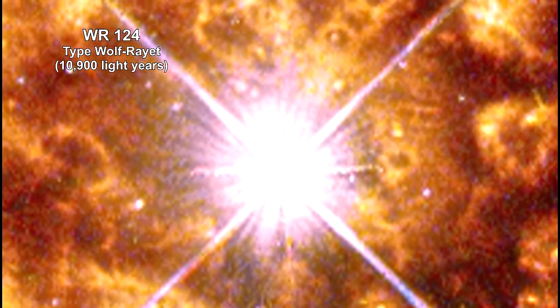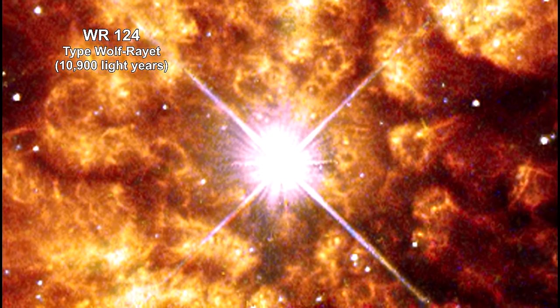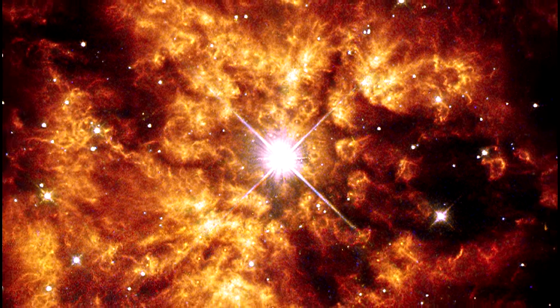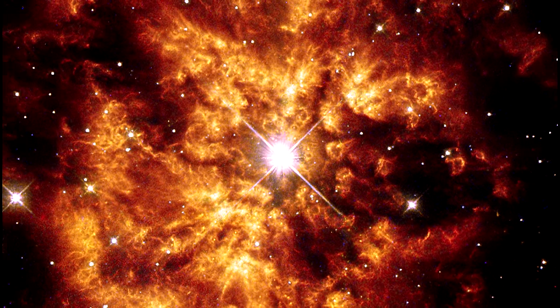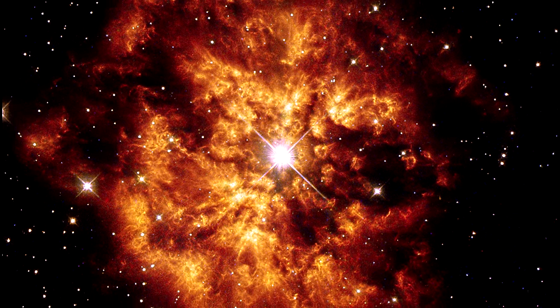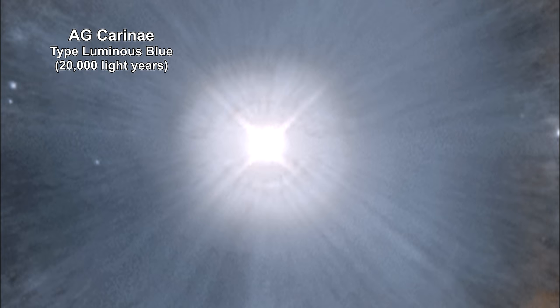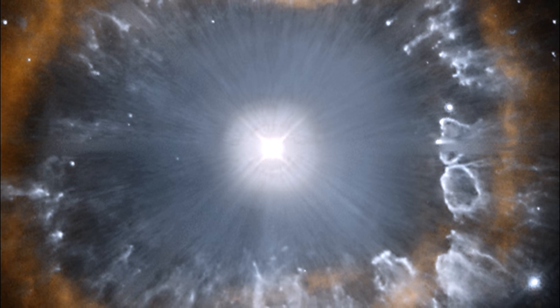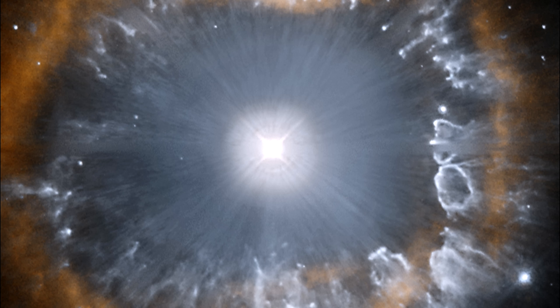Here we see the super-hot star WR124 and the hot clumps of gas it is ejecting into the space around it. Ejection gases are traveling at over 150,000 kilometers per hour — that's 93,000 miles per hour. The cloud, known as Nebula M167, is estimated to be no more than 10,000 years old, which is very young in astronomical terms. Here's a Hubble image of the luminous blue variable star AG Carinae, which has evolved from the main sequence with 20 times the mass of the Sun. AG Carinae is losing its mass at a phenomenal rate, creating powerful stellar winds with speeds up to 7 million kilometers per hour, or 4.3 million miles per hour, responsible for the shroud of material visible in this image.